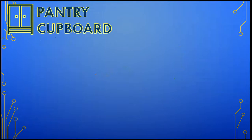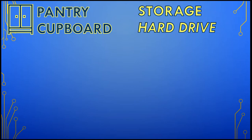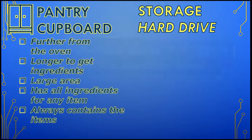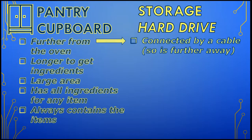So the pantry cupboard is basically the same as storage, or hard drive. Storage is used to store and access programs and data on a long-term basis. Just like the pantry cupboard is further from the oven, hard drives are further from the CPU as they are connected by a cable to the motherboard.